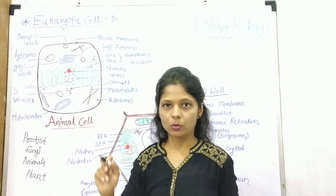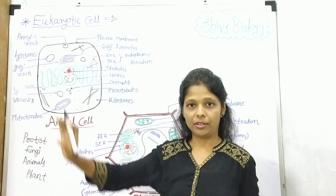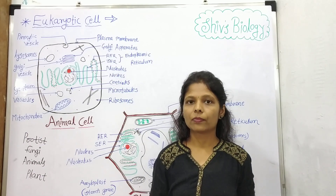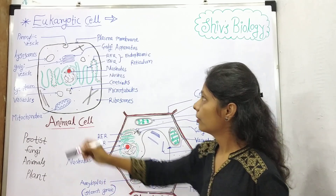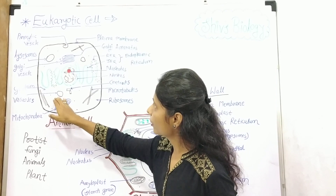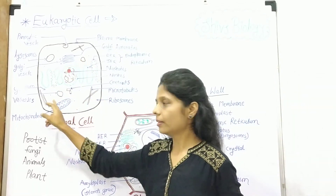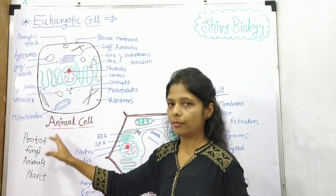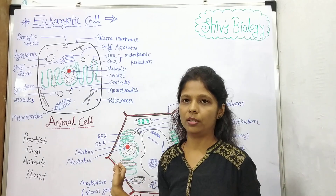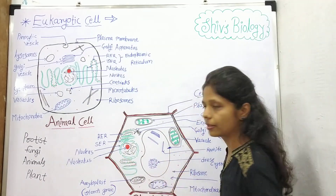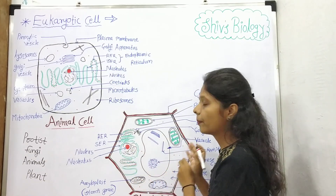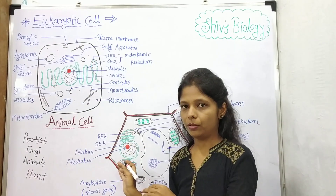The endoplasmic reticulum and Golgi apparatus are involved in transport of proteins to their appropriate destination. Lysosomes are helpful in digestion of macromolecules. Then there are vacuoles — these are the vacuoles, smaller in size, present in animal cells, and many vacuoles are present in animal cells. In plant cells, a large central vacuole is present, and because of this centrally present vacuole, other cell organelles of plant cells are pushed towards the periphery of the cell.